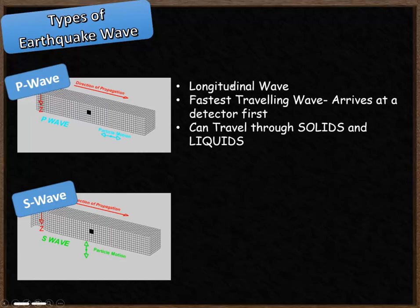The P wave is a longitudinal wave. That means that the particles vibrate in the same direction that the wave moves. It's the fastest travelling type of earthquake wave and is always going to arrive at your detector first. P waves can travel through solids and liquids.